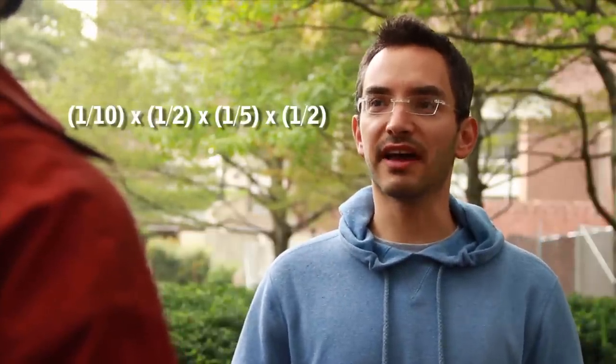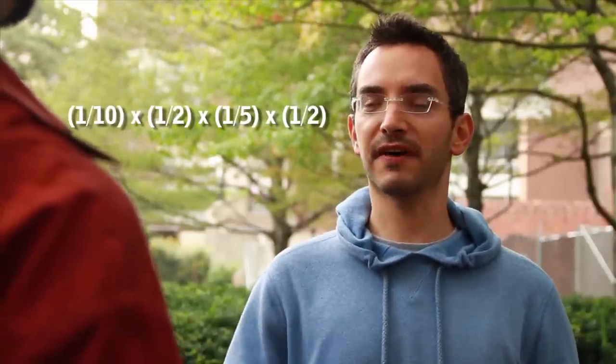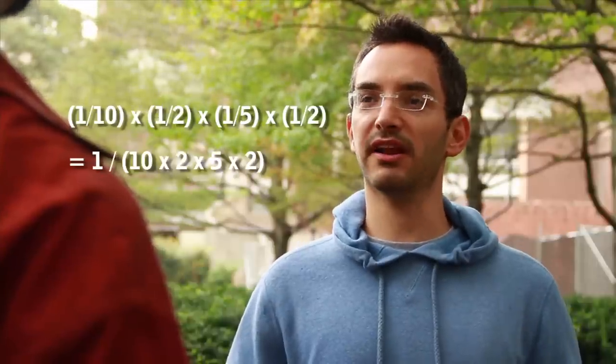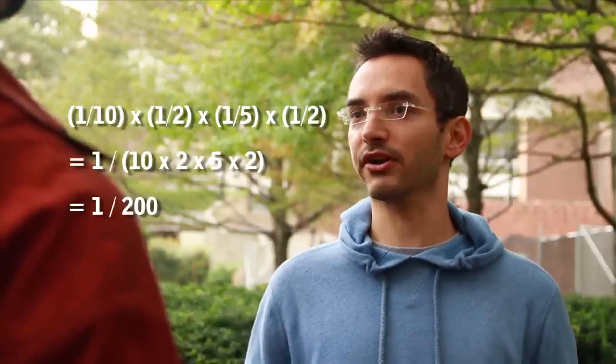How do you combine it into just one? You multiply them together. I should have known. Because you have to succeed in all four initial rounds to make it to the fifth. So that's 1 out of 10 times 1 out of 2 times 1 out of 5 times 1 out of 2, which is 1 out of 10 times 2 times 5 times 2. So it's 1 out of 200. Those are tough odds, but not impossible.